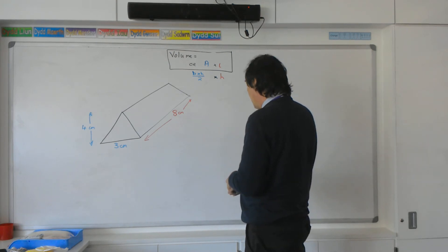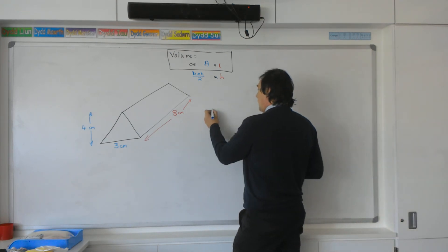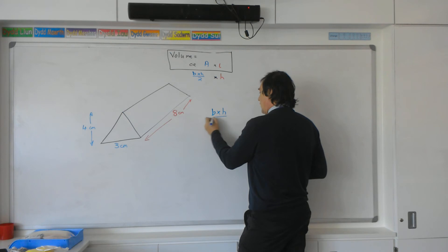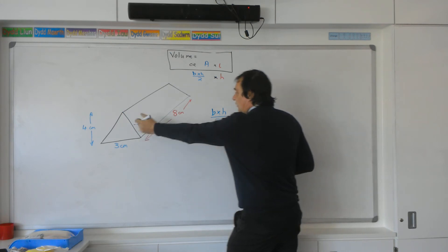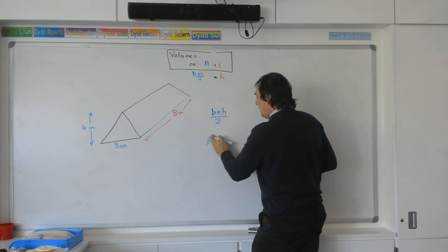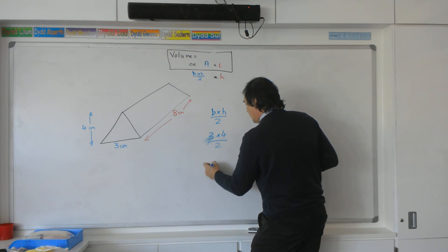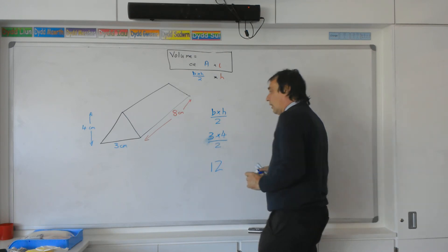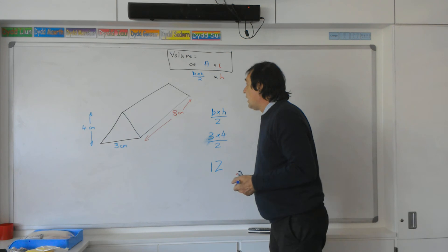Working on here, we've got to work out the area. The base times the height divided by two—that's the area of that triangle there. Let's do it in proper order: three times four divided by two, which gives us an answer of twelve. So the area of that triangle is twelve.